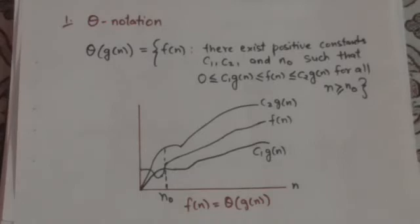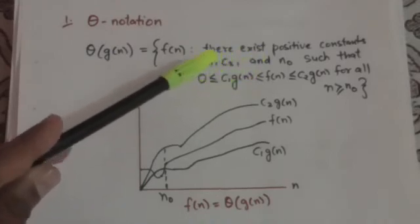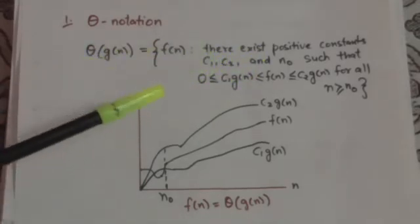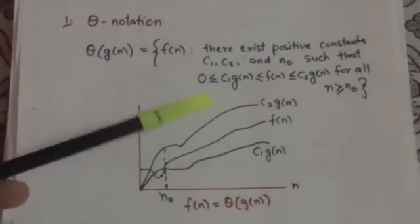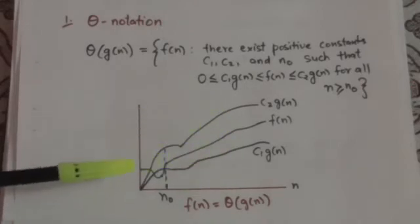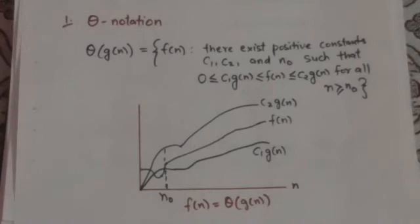A function f(n) belongs to the set Theta g(n) if there exist positive constants c1 and c2 such that it can be sandwiched between c1·g(n) and c2·g(n) for sufficiently large values of n. This graph shows f(n) = Theta g(n).